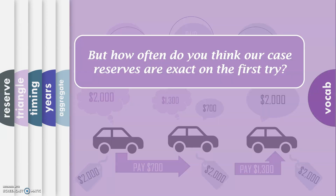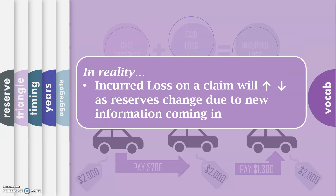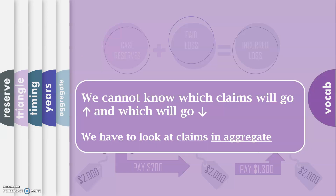But how often do you think our case reserves are exact on the first try? In reality, incurred loss on a claim will go up and down as reserves change when we get new information about that claim. Maybe we didn't know that someone got injured before and now they did. Maybe once the garage mechanic gets under the hood of the car, they see that there's way more damage than they actually thought, or vice versa. We don't know which claim costs are going to go up and which are going to go down. What we have to do is look at all the claims in aggregate.